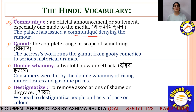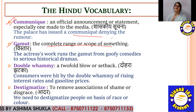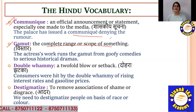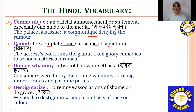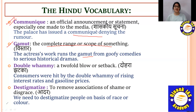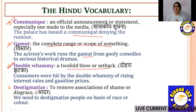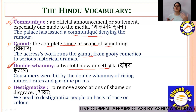The next word is Gamut — the complete range or scope of something. Example: 'The actress's work runs the gamut from goofy comedies to serious historical drama' — meaning her work covers the complete range. That is the gamut — the scope or arena. The third word is Double Whammy — a two-fold blow or setback. It means a mental shock that happens twice. If something surprises you twice, that is known as a Double Whammy.